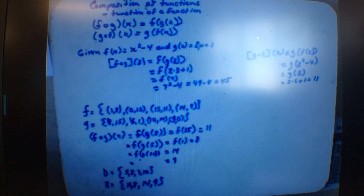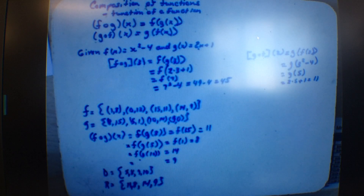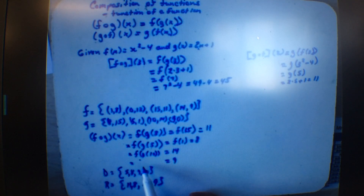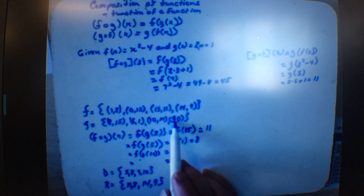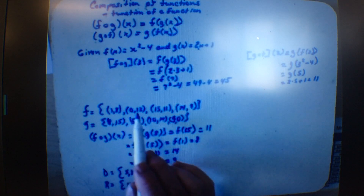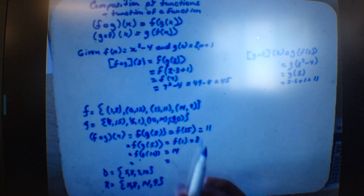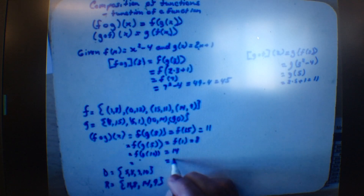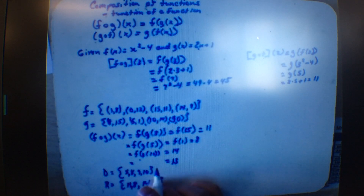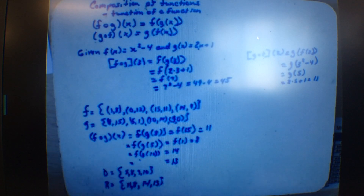Why is there 9 in both the domain and range? If we put in 9 for g, we get 0, and then f of 0 is 13. So the range value should have been 13, not 9 — my apologies for that error.